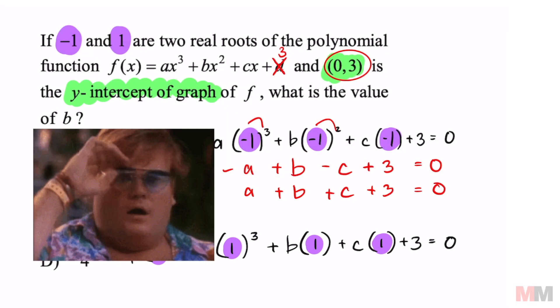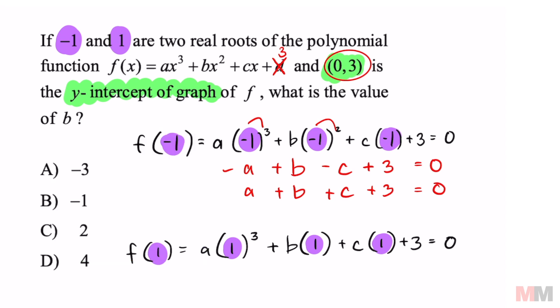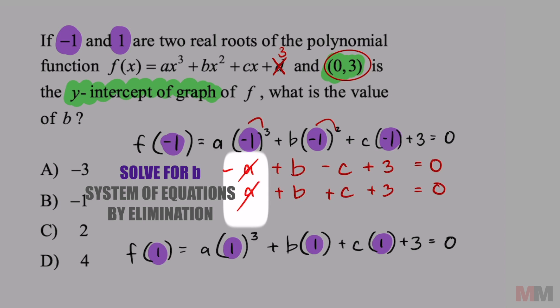So you got to check this out right here. I think it's a pretty cool problem. This is just a system of equations. If we add these equations up, negative a is going to cancel a. b and b is going to turn into 2b. c's are going to cancel out. That's going to be positive 6 equals 0.